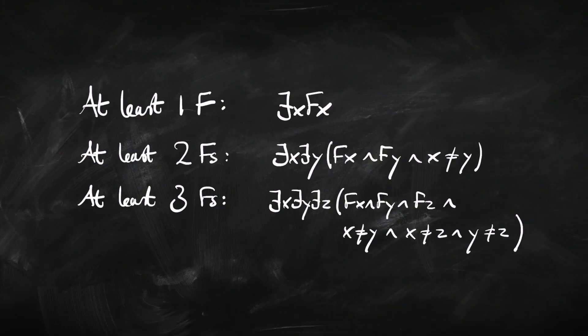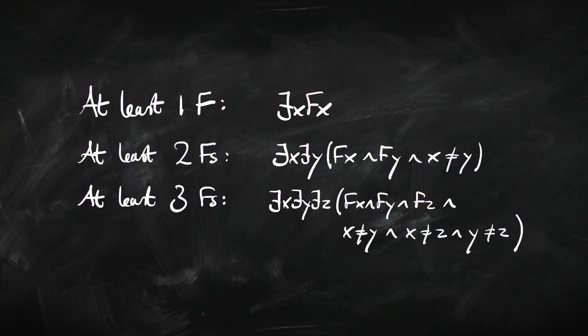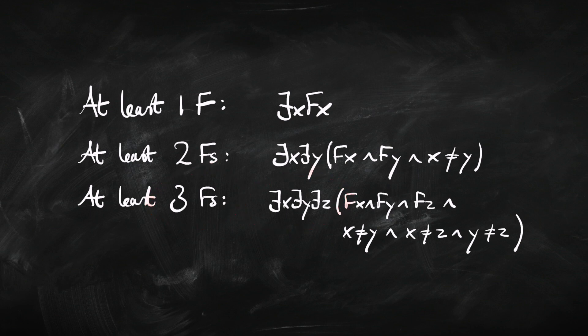Notice a pattern: if we're going to say there's at least one of something, we use one quantifier; at least two, we use two quantifiers; at least three, we use three quantifiers, and so on. That's the tip to help you remember how many quantifiers you need to express there's at least n F's. So that's how we say there's at least something.